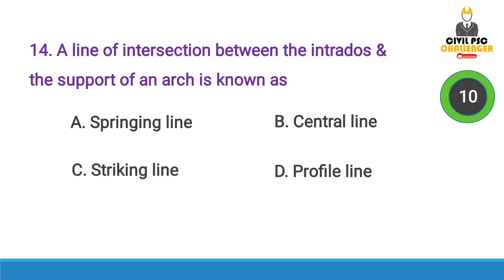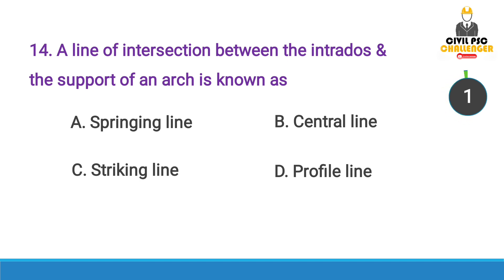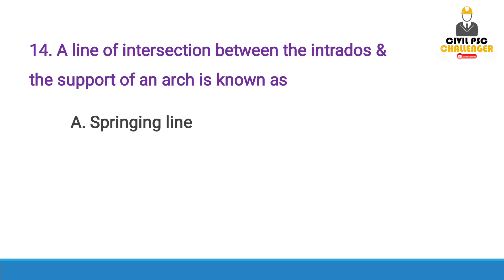Next question: A line of intersection between the intrados and the support of an arch is known as — Answer option A, Springing Line.